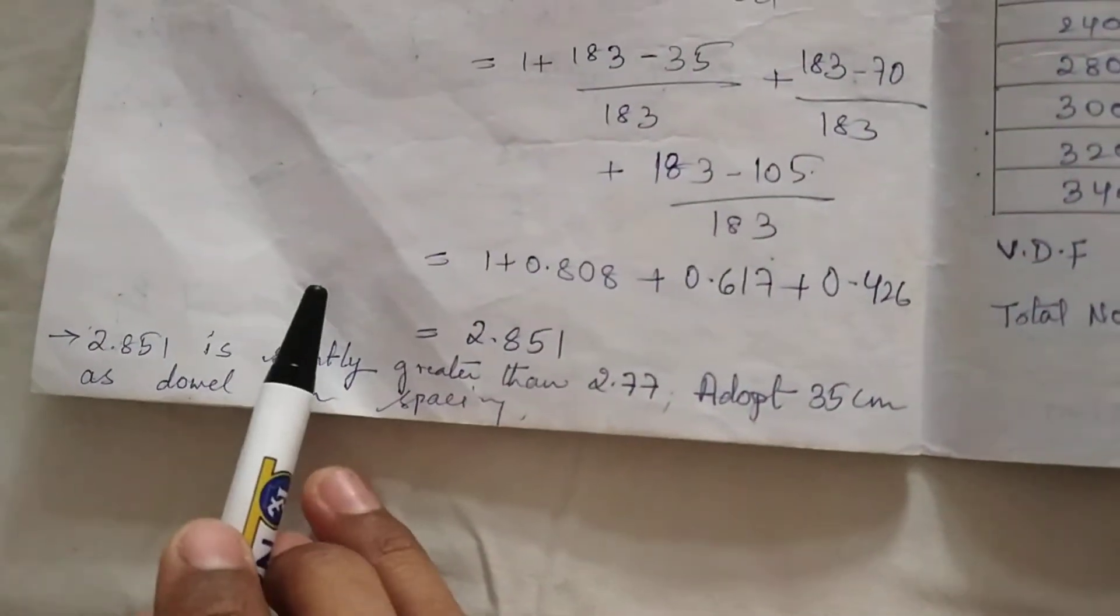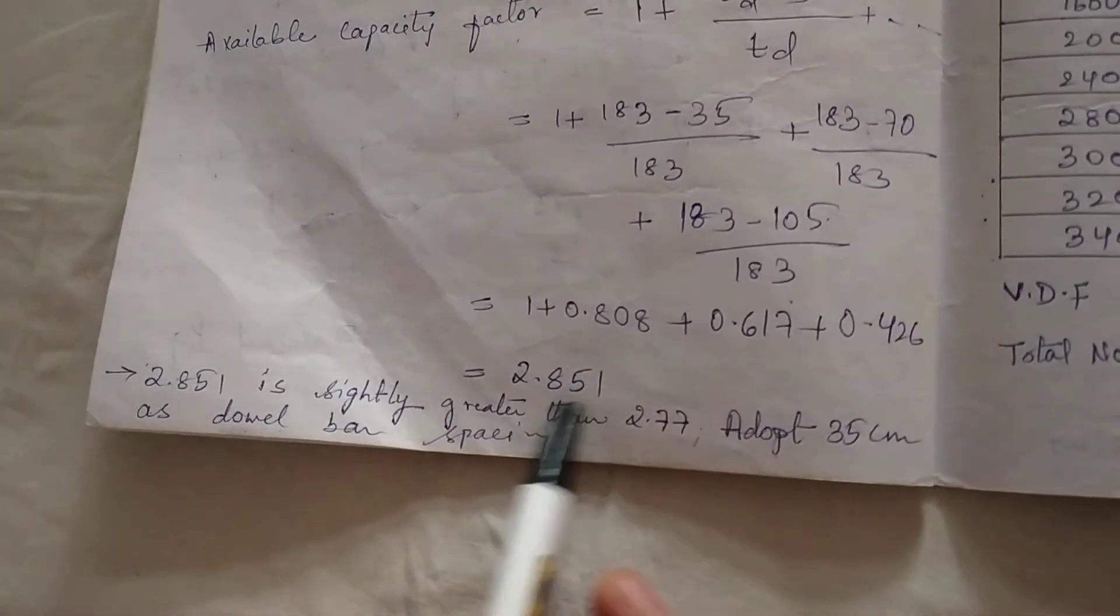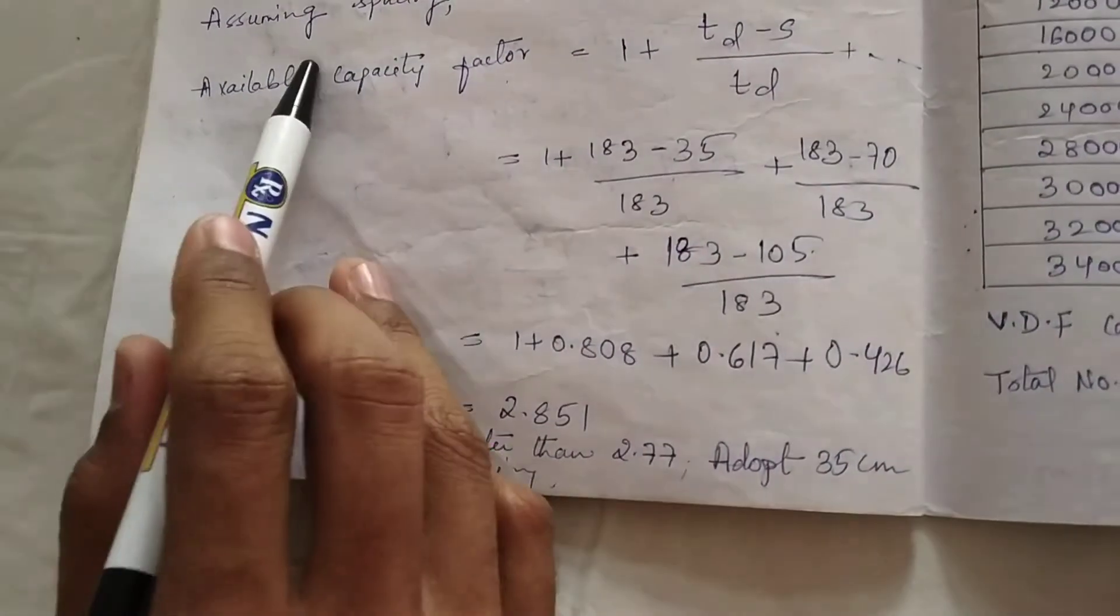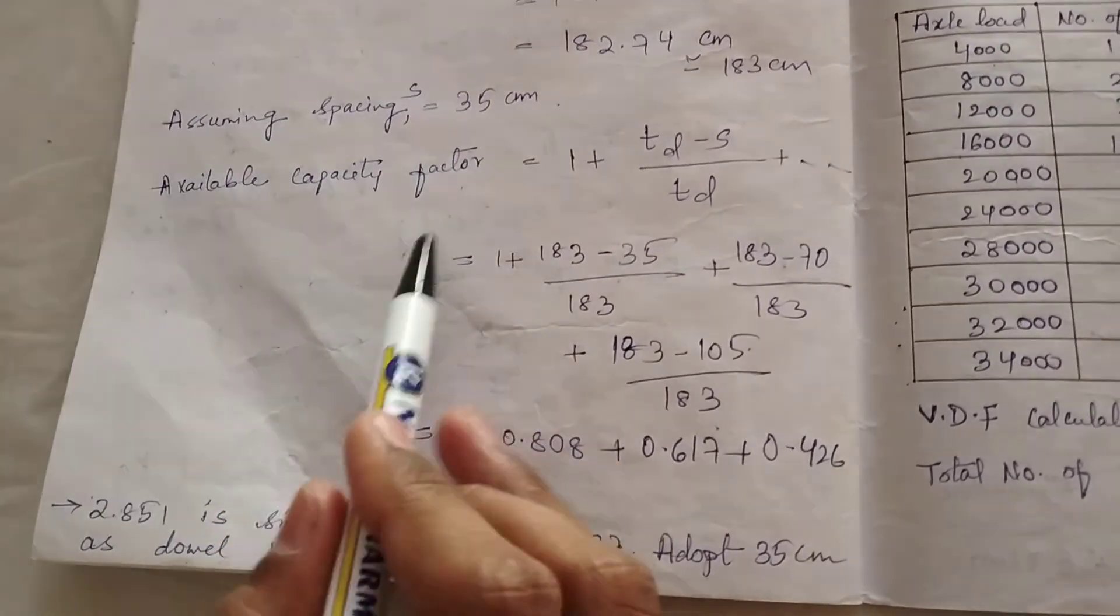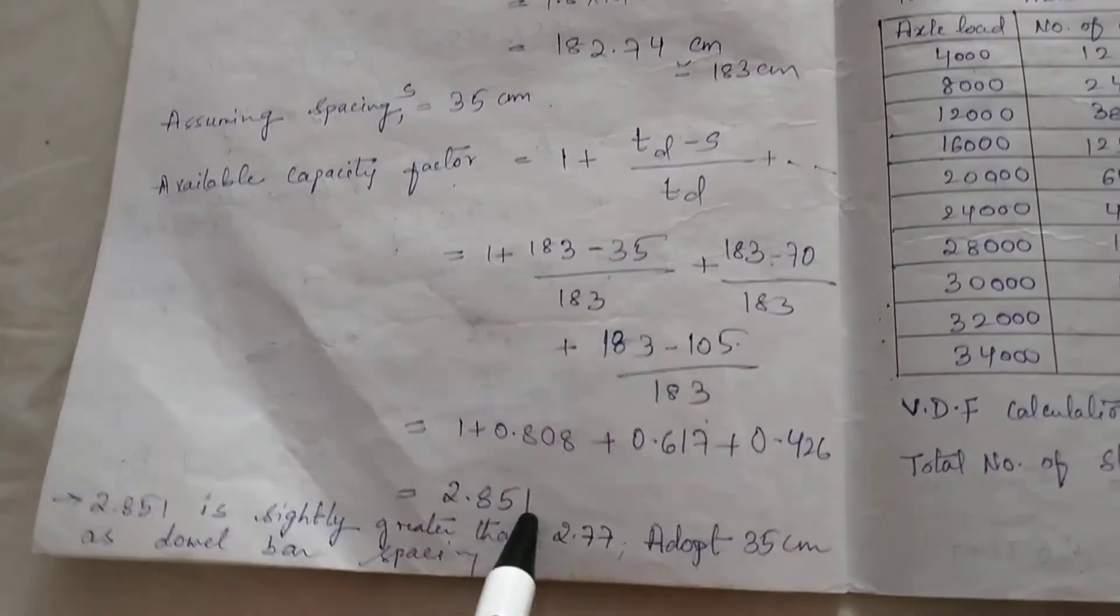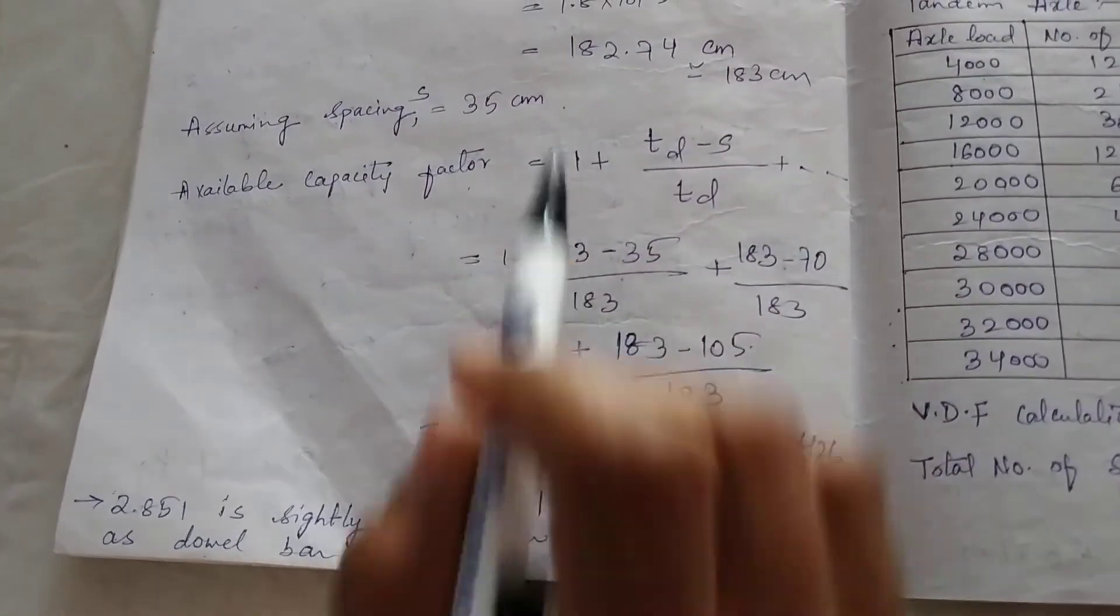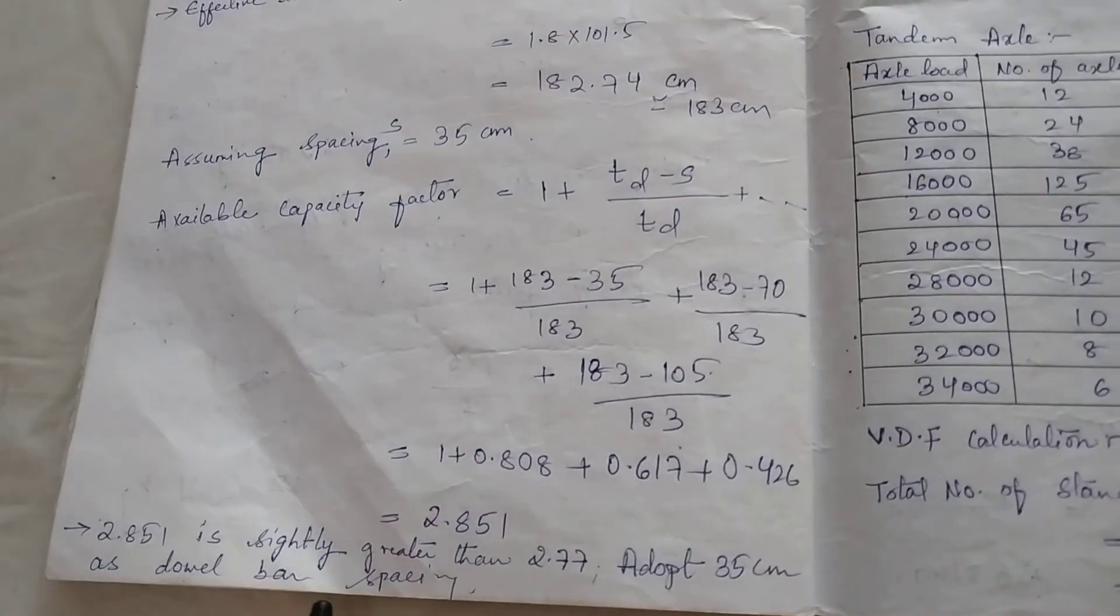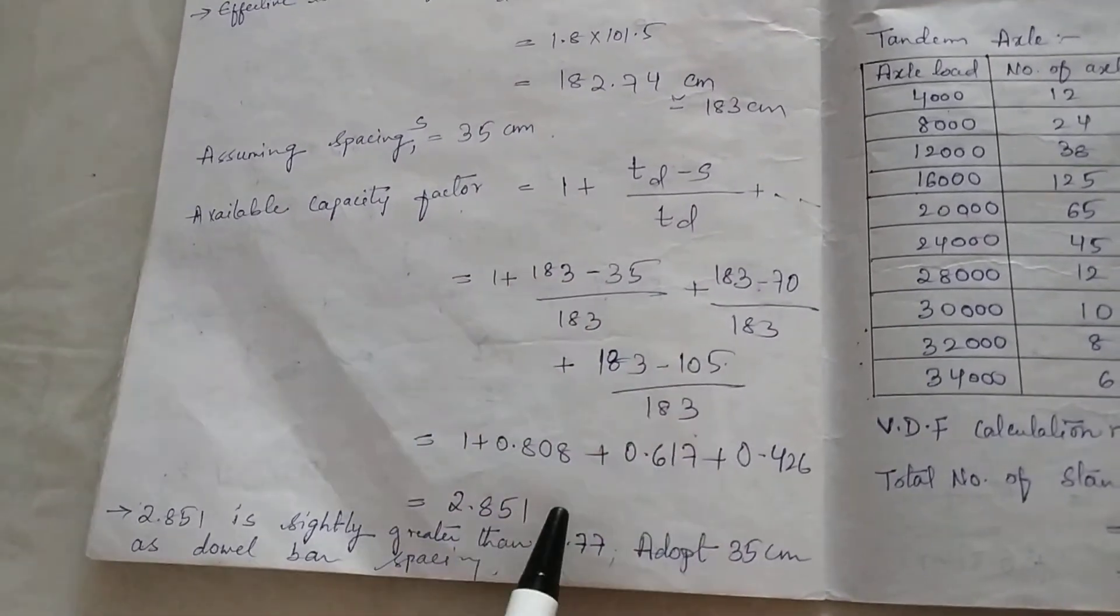If the available capacity factor value comes less than the required capacity factor, then we have to do the same procedure again until the available capacity factor comes more than the required capacity factor. Our design will be over after getting this value more than required.